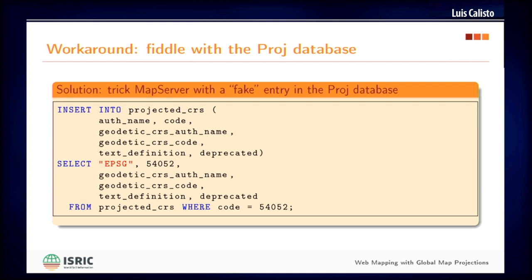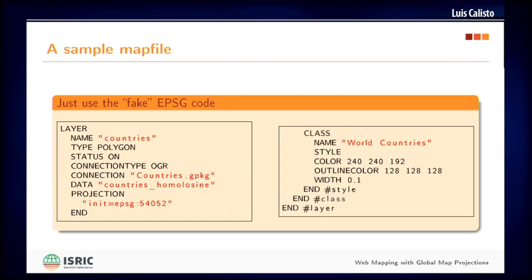It's actually very easy to trick MapServer to use a modern map projection, a modern CRS. All you need to do is create a fake entry in the projection database. You can do it with a piece of code like this one, which basically copies an existing record from the projected CRS table to a new record with a new authority — inserting the EPSG authority to a CRS defined by someone else, in this case ESRI. Then you code your map file for MapServer using your fake EPSG code, and you're good to go. MapServer is working and serving very nice WMS layers with your preferred coordinate reference system.